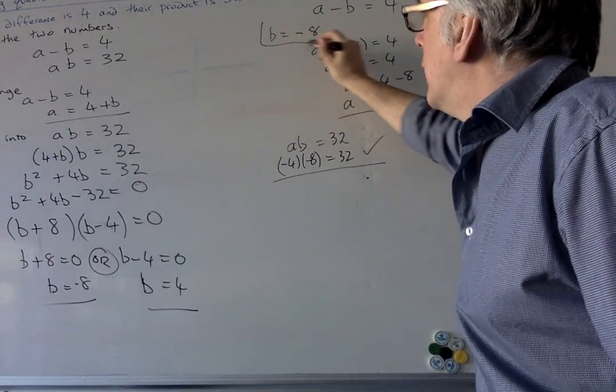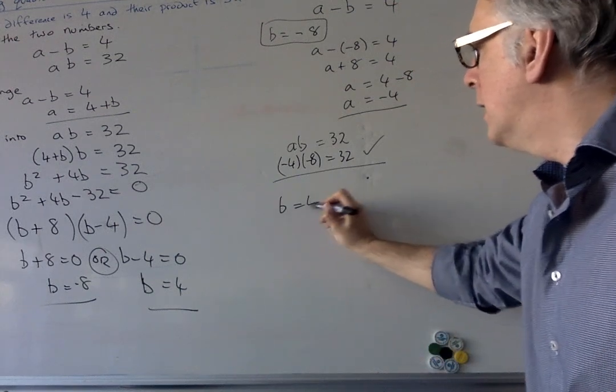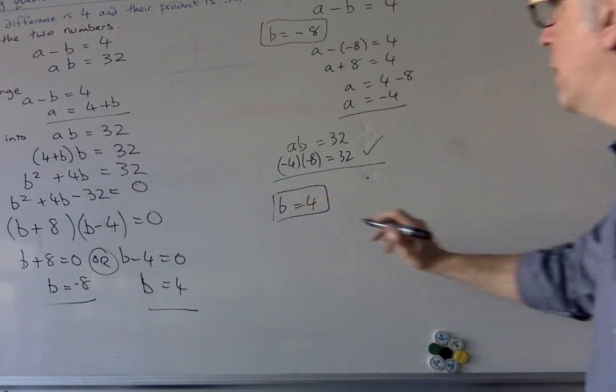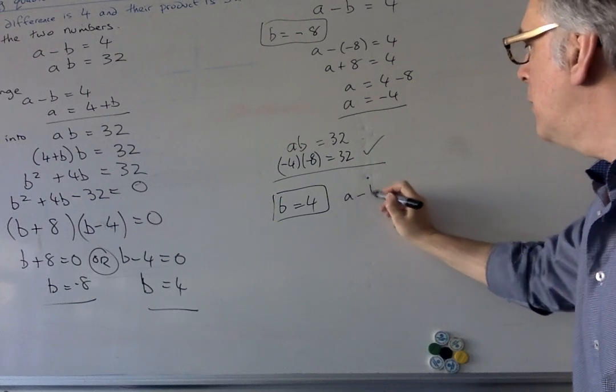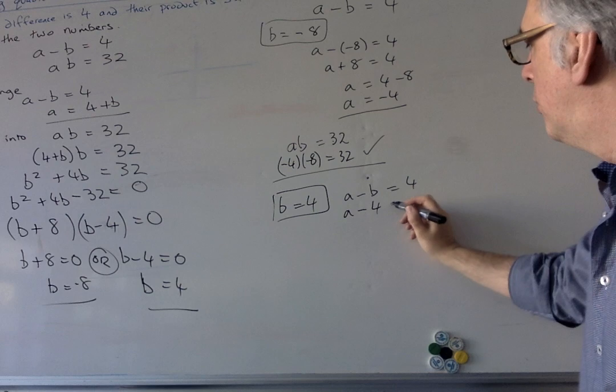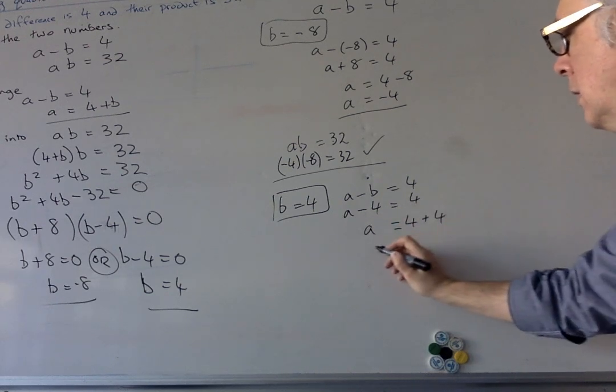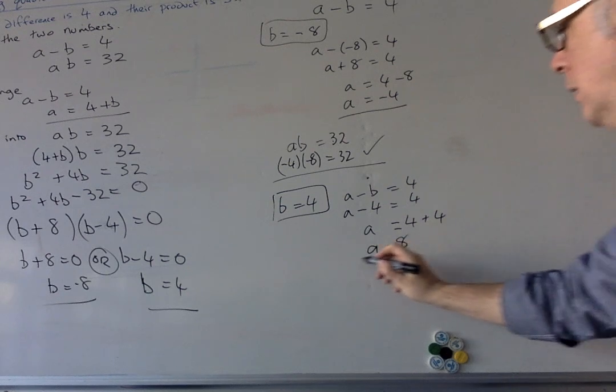We also said that B could be 4. So let's see what happens when B is 4. So here we've got B is 4. Again, A minus B equals 4, so A minus 4 equals 4. Add 4 to both sides. A is going to be 8. So let's check.